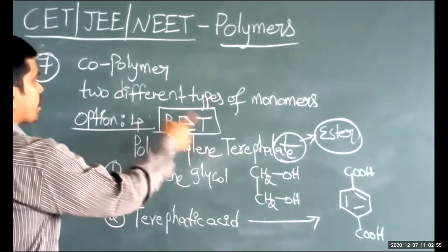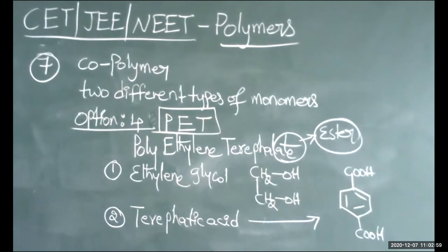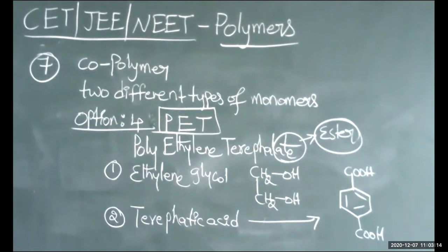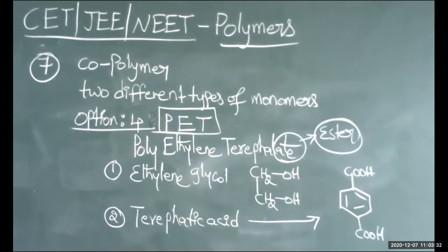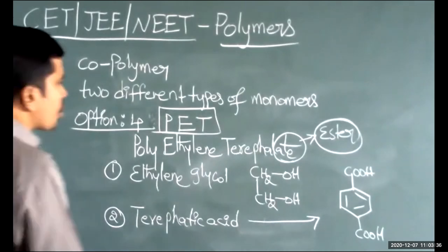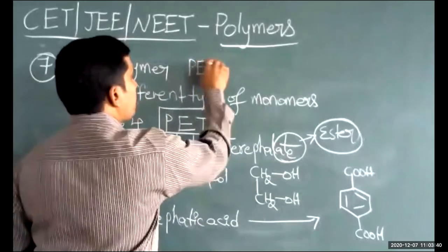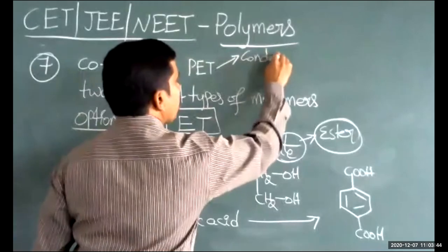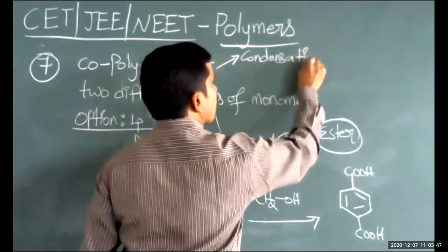Ethylene glycol is one monomer; phthalic acid with a benzene ring is the other. Together they make PET a copolymer. PET is also a condensation polymer.